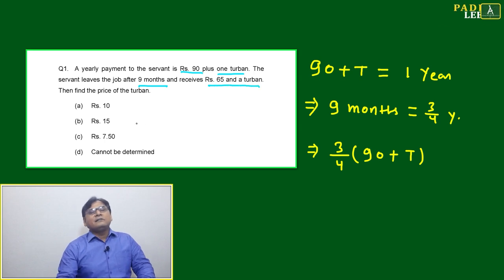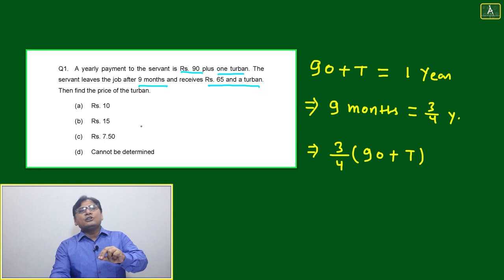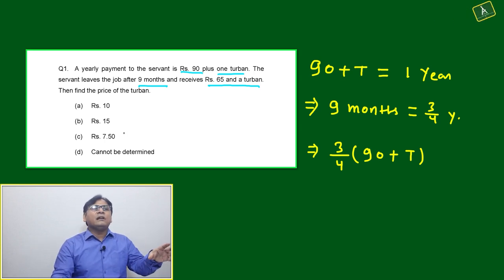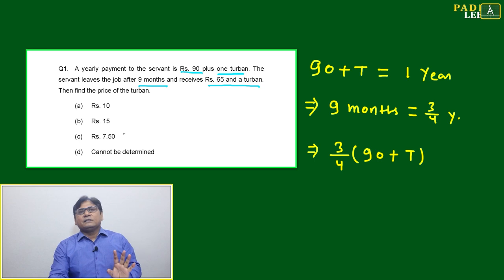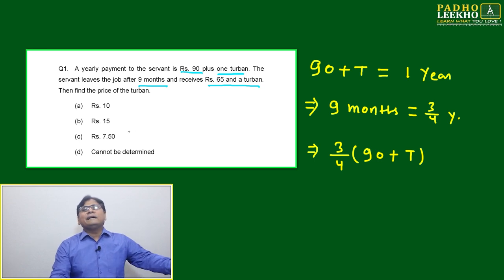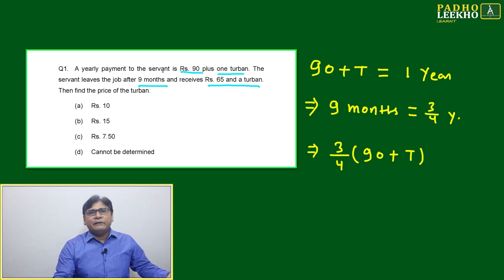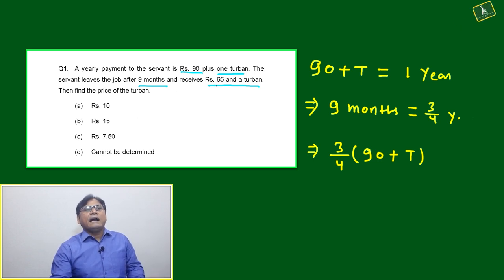But servant has not continued the job till 12 months. Now here, the only thing we have to look: in one year it is 12 months. Just to break it in 12 months means 12 month promise was there, but he has left the job after nine months only, and after nine months he received 65 rupees and a turban.